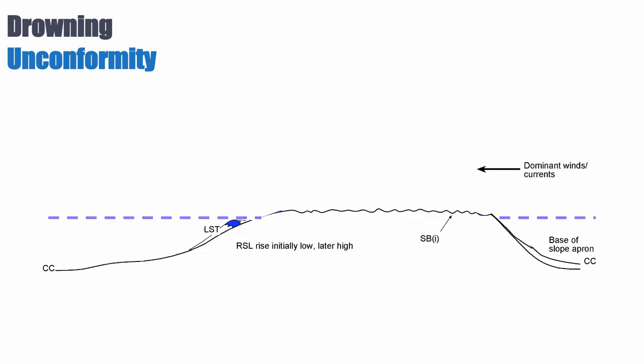So let's start with an example where we have a lowstand, so you see the lowstand wedge, and we have the antecedent surface which is the top of the previous highstand.